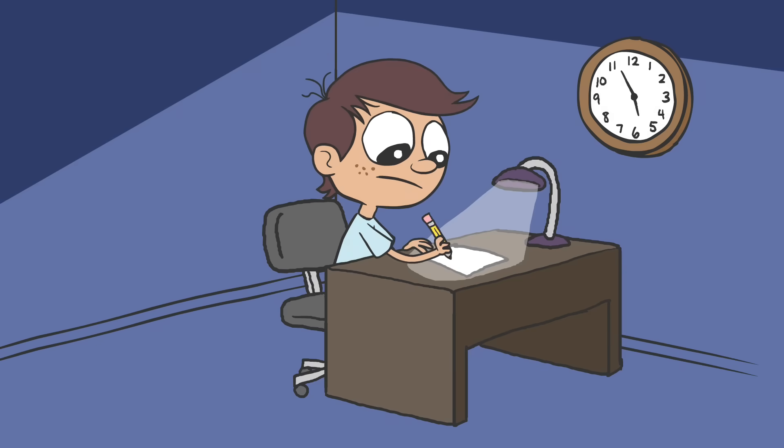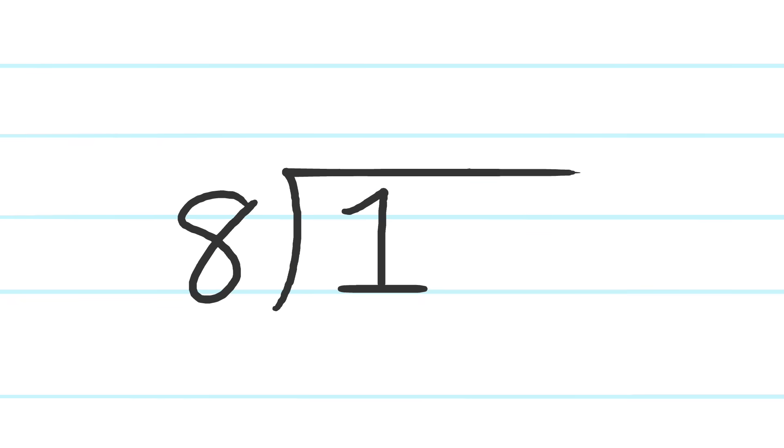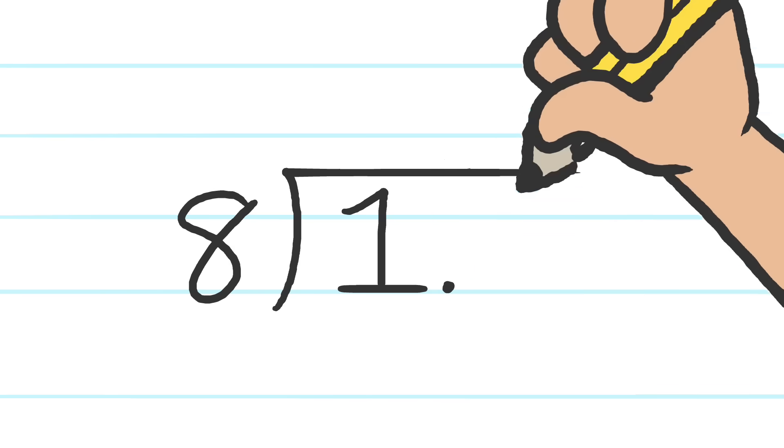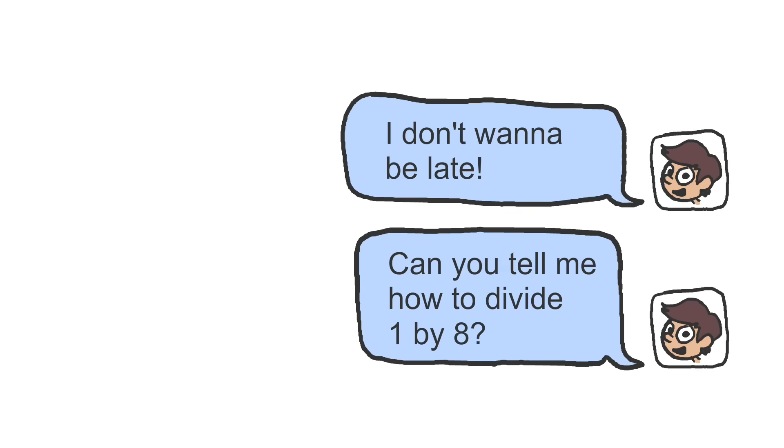I had to get my homework done before the smooth dance. I had to convert a fraction, couldn't leave it to chance. I divided the numerator by the denominator, but to my surprise, there was a remainder. I texted my friend, I don't wanna be late. Can you tell me how to divide one by eight?